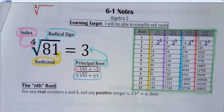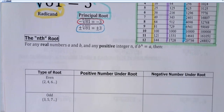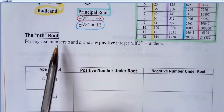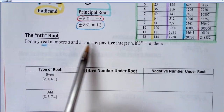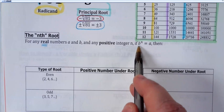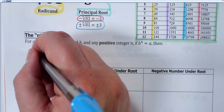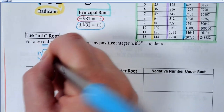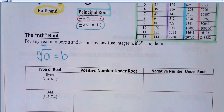The nth root of any real numbers a and b, with positive integer n: if b to the nth power equals a, then the nth root of a equals b. That's the technical definition. I'm going to give you an example with some numbers so it makes a little more sense.